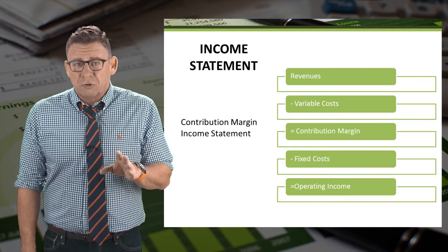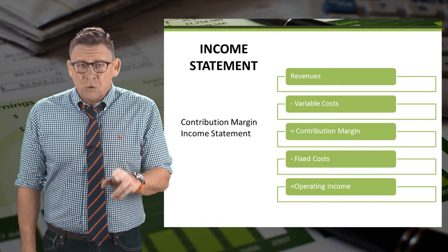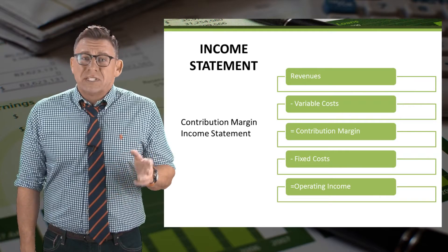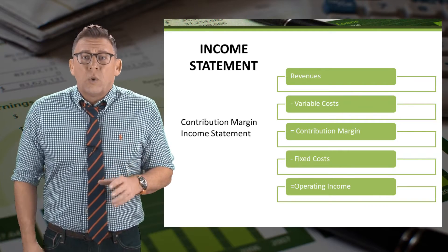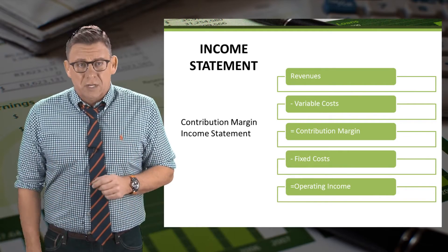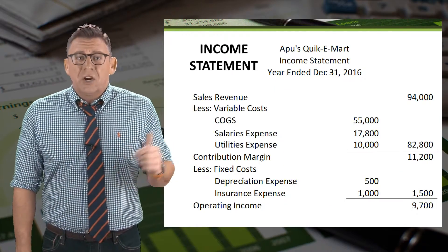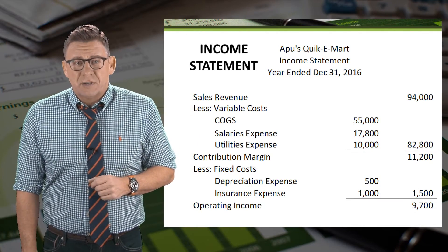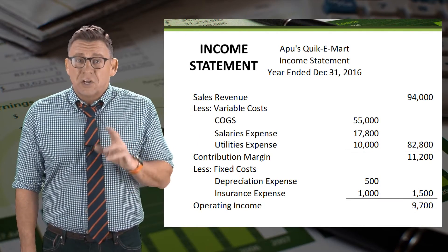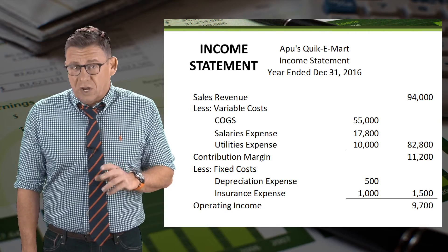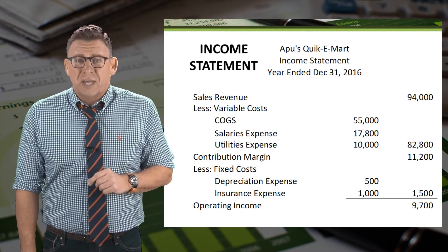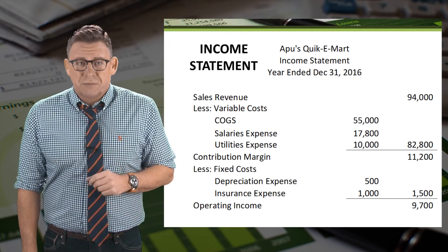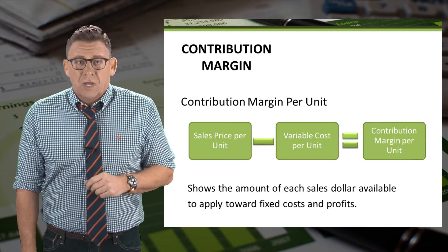When contribution margin equals fixed costs, operating income is zero. We call this term break-even. Here is an example of the contribution margin income statement. Let's learn how to use the information on the contribution margin income statement to make business decisions.